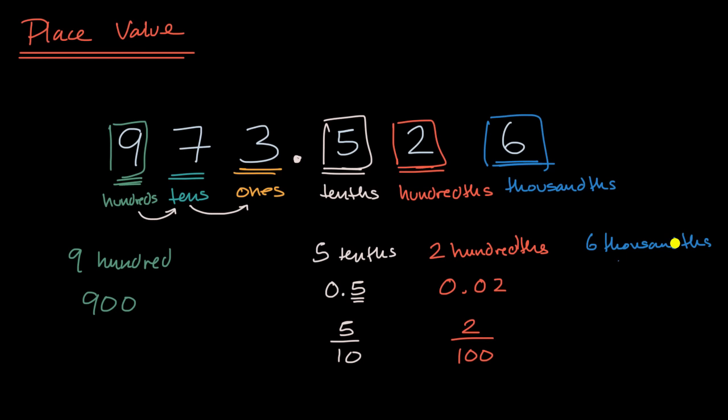I could also write that as zero point, let's see, this is a tenths place, hundredths place, and then in the thousandths place, I have six. Or I could write this as six over one-thousand. Six-thousandths.